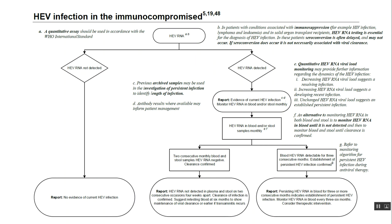Diagnosis of HIV infection in immunocompromised patients. We have discussed earlier how to diagnose HIV infection in immunocompetent patients, but when we are talking about immunocompromised patients — that means people with immunosuppression, for example HIV, or having hematological malignancy like lymphoma or leukemia, or solid organ transplant recipients.